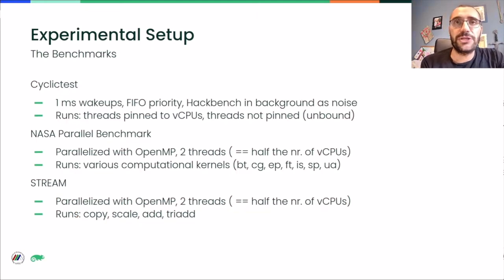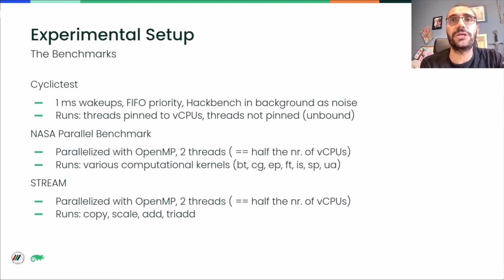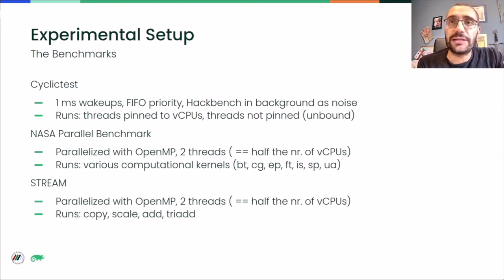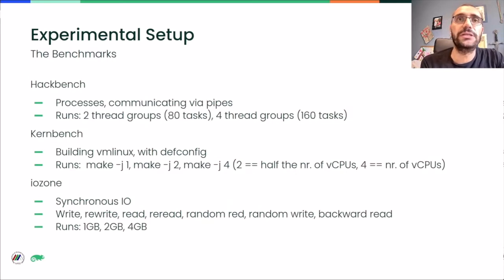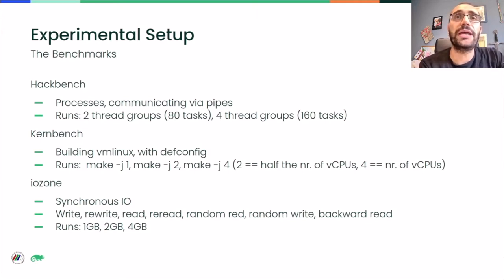We used MM-tests as our benchmarking suite, as it can orchestrate running benchmarks inside one or even multiple VMs. We ran several benchmarks with multiple configurations. We ran cyclic tests with wake-up threads either pinned to the vCPUs or not. We ran NAS with OpenMP and with two threads running in parallel in the four vCPU VM, executing the various computational kernels. We also ran STREAM with two threads in the four vCPU VM. We ran hackbench with either two or four groups of threads, and kbuild with either one, two, or four build jobs in parallel, and IOzone for synchronous IO with different file sizes.